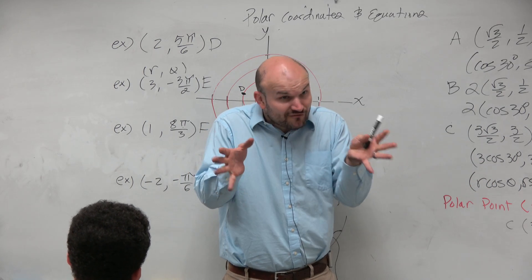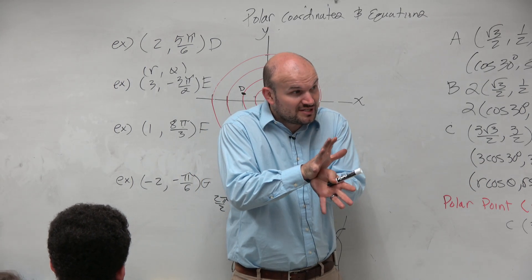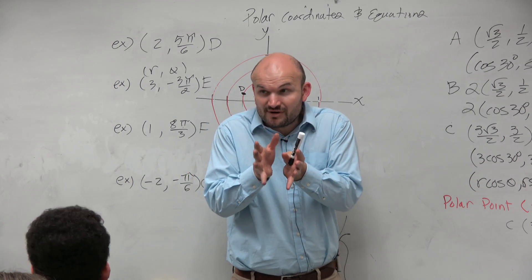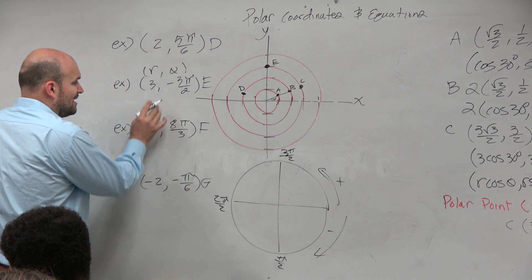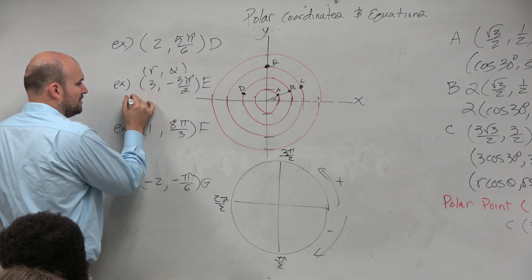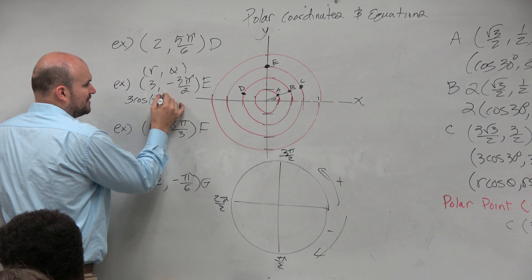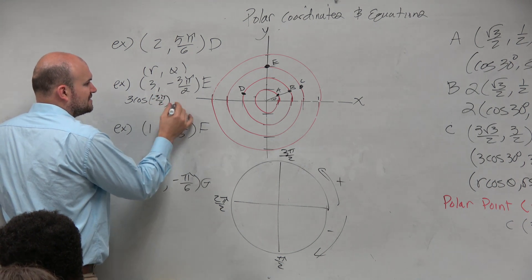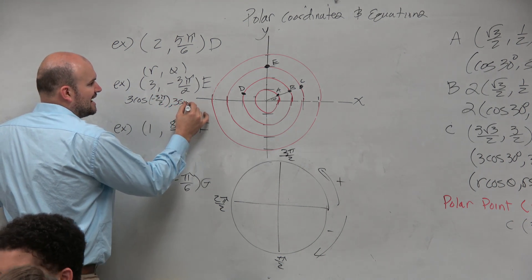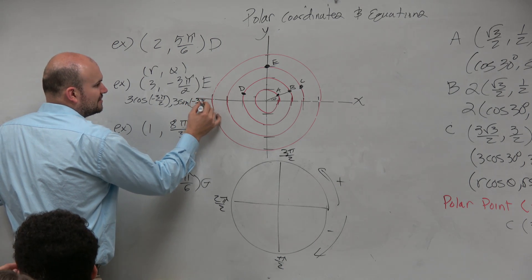If we're kind of confused, and that's why I said when you guys get confused, then write it in rectangular form. See what it looks like. So why don't we do it for this one? Because this one's relatively simple. 3 cosine of negative 3π over 2, comma 3 sine of negative 3π over 2.